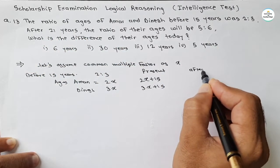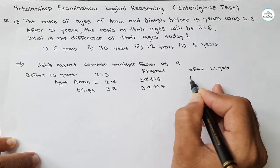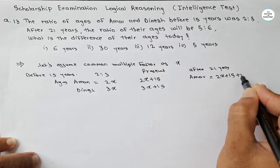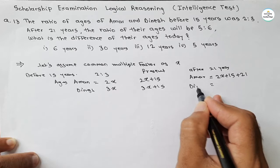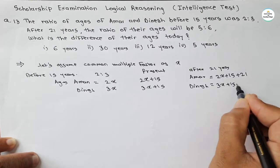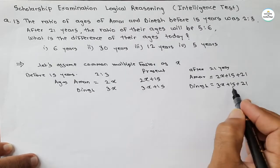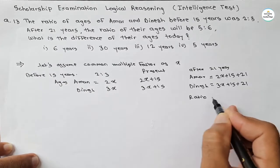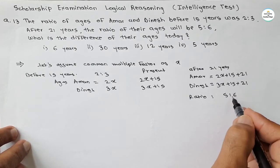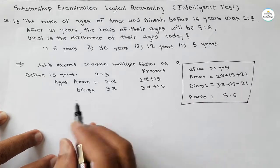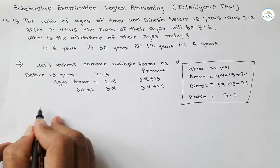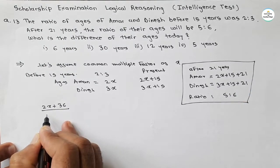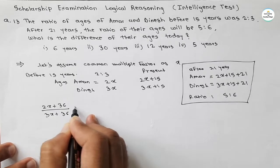After 21 years, the ratio is given as 5 to 6. Amar's present age is 2x plus 15, and after 21 years it becomes 2x plus 15 plus 21. Similarly for Dinesh. So we can write: after 21 years, ratio is 5 to 6. So we write 2x plus — adding 15 plus 21 that is 36 — and Dinesh age 3x plus 36, and their ratio equals 5 to 6.